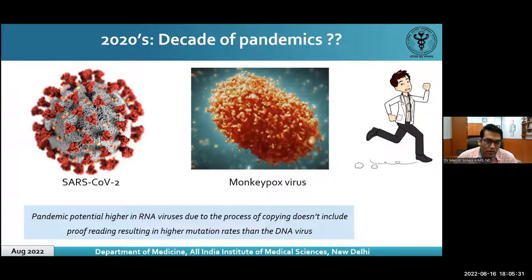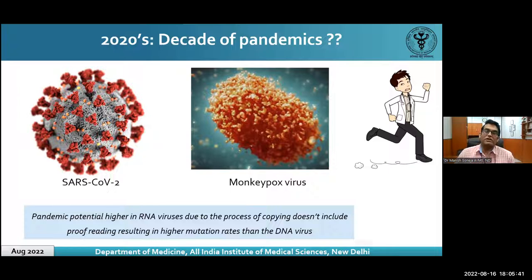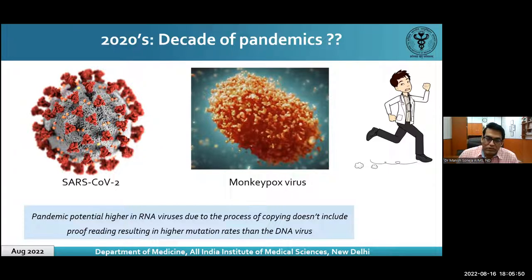We know that the pandemic potential of an RNA virus is higher because the process of replication doesn't include any proofreading, resulting in higher mutation rates than DNA viruses, which increases infectivity and disease-severity-causing ability. But this decade, for the first time, a DNA virus is causing a pandemic.